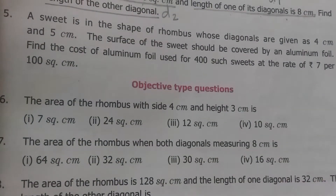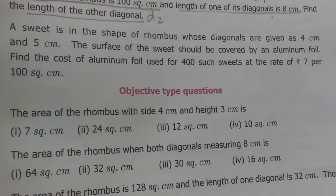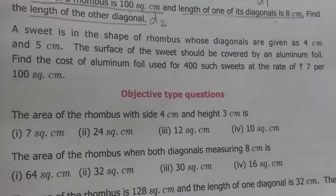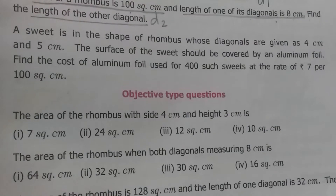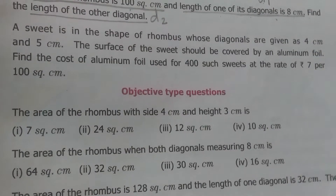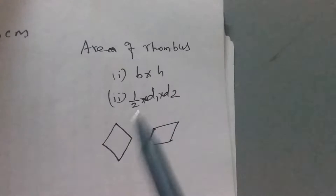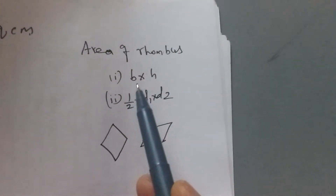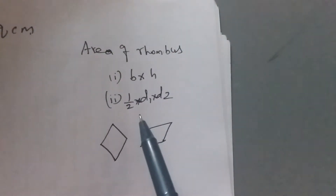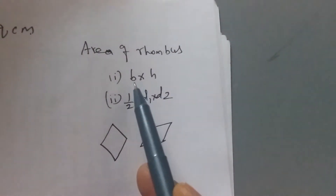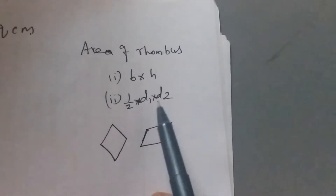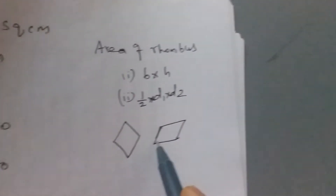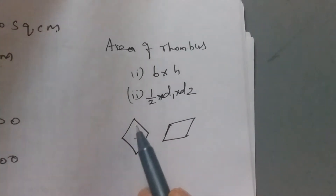The previous exercise was area of parallelogram; now this is area of rhombus. We know the area of rhombus — do you remember? Let us quickly recall. We have two formulae to find the area of a rhombus: one is base into height, and another one is half into d1 into d2.